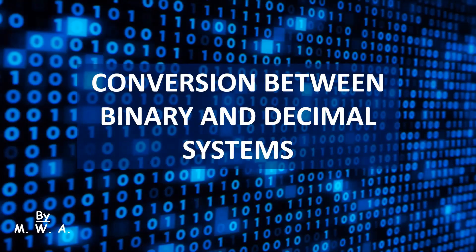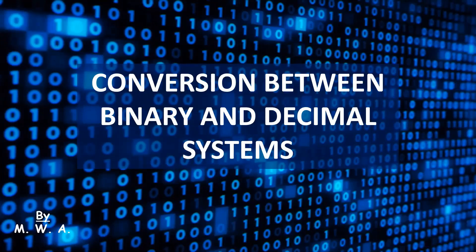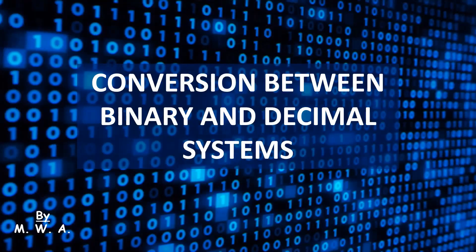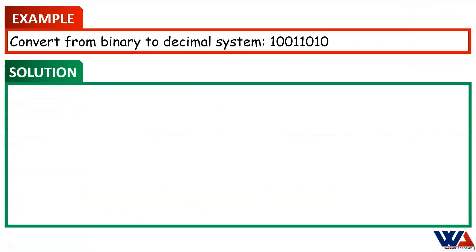Conversion between binary and decimal systems. In this example, we will convert a binary number that consists of zeros and ones into a decimal number.